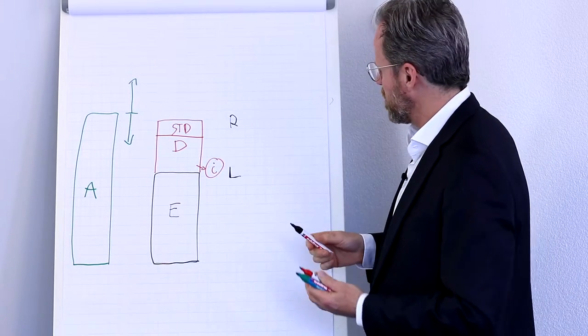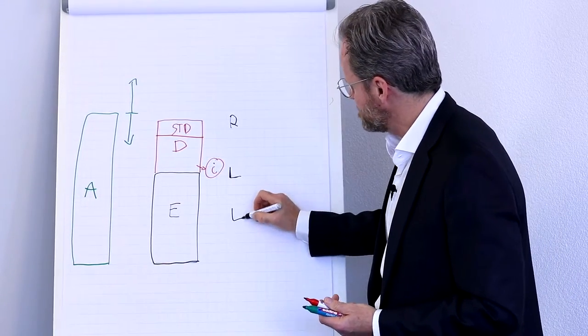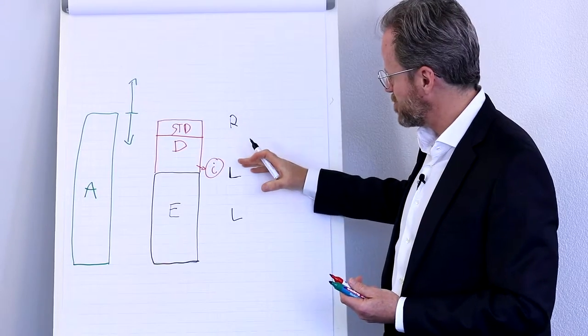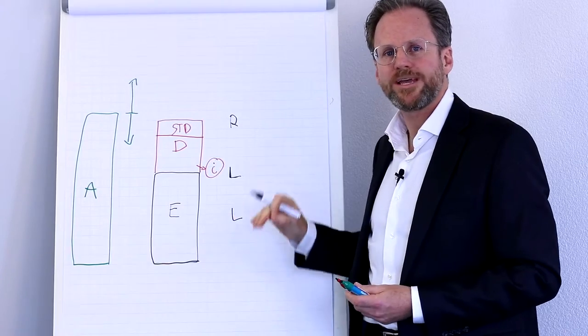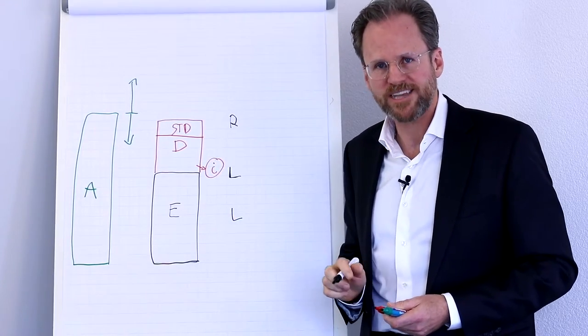This we call the liquidity rank. So we have the refinancing rank, the leverage rank, and the liquidity rank. And all these three go into the overall Obermatt safety rank.